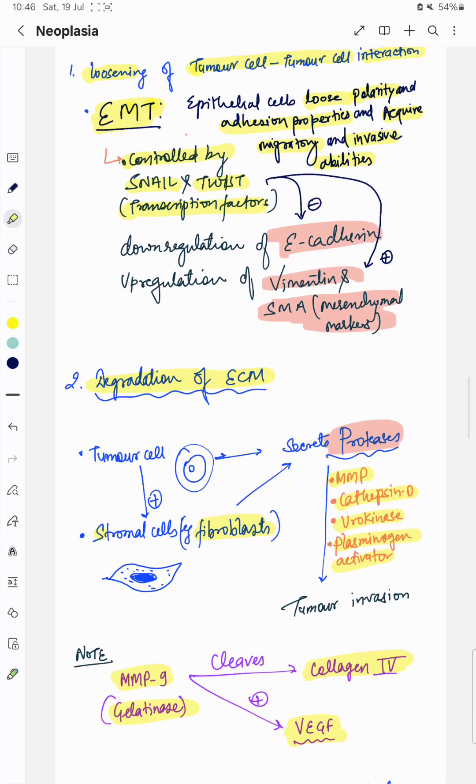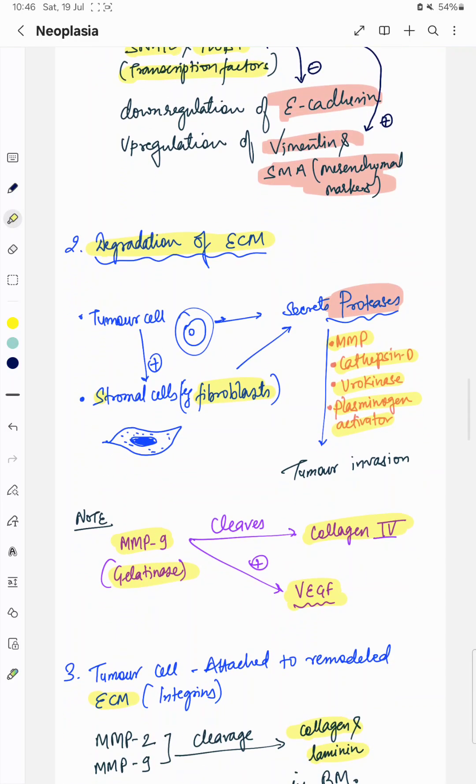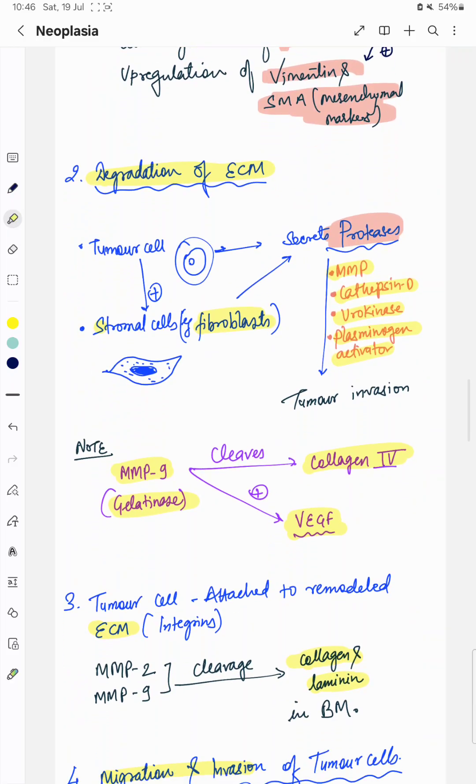After loosening of tumor cells, these tumor cells degrade the surrounding extracellular matrix by the secretion of various proteases. Tumor cells also activate stromal cells like fibroblasts. They also secrete proteases.